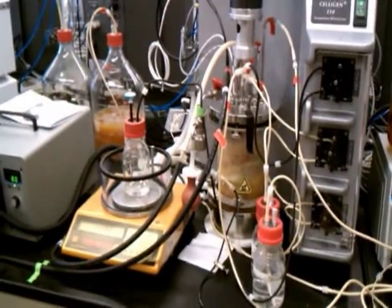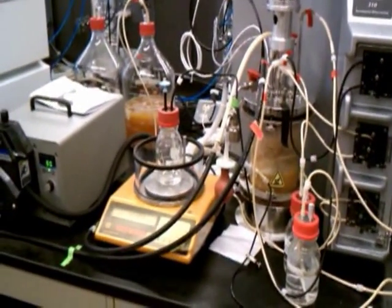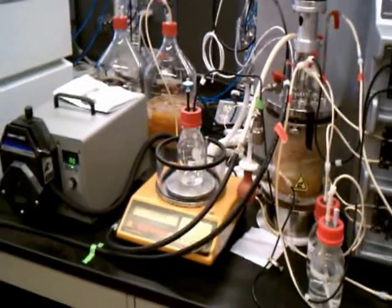The butyrate is fed from a separate reservoir on demand. Whenever the pH value in stage 2 increases above a certain threshold value, this is the signal that most of the butyrate present has been converted into the corresponding alcohol and addition of more butyrate is triggered. This way, we control the butyrate concentration at a pretty constant level.